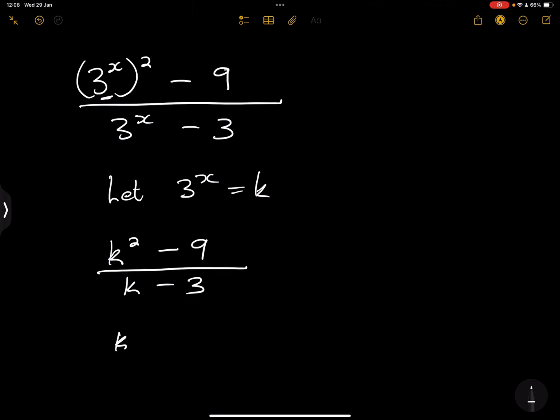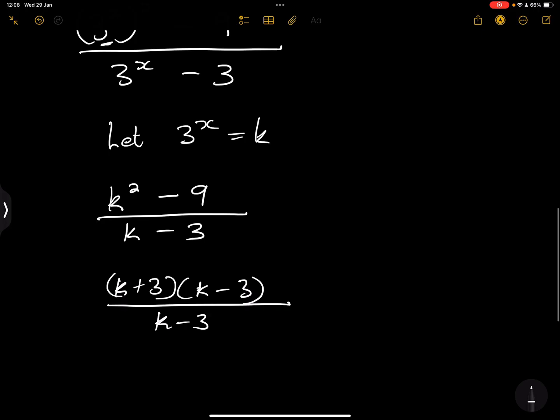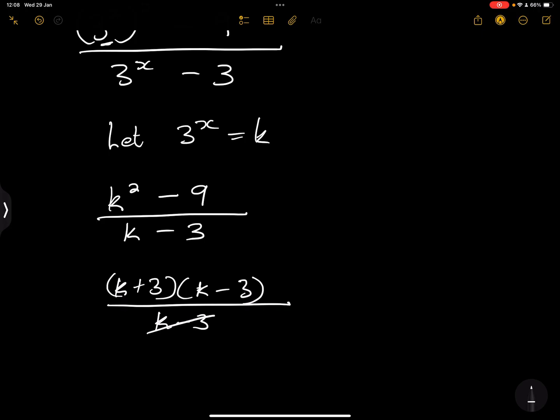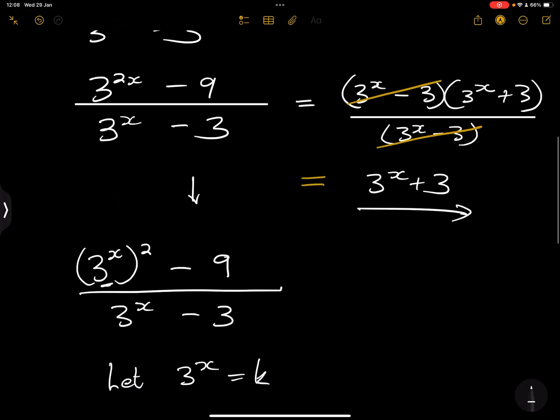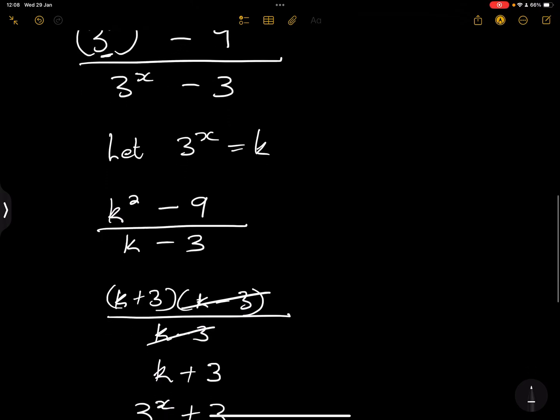So I hope now you are able to see that you've got the difference of two squares at the numerator. So that will become K plus 3, K minus 3, and this is divided by K minus 3. And what happens is you cancel that with that. That gives us K plus 3, and your final answer will now be 3 to the power x plus 3, which is exactly what we had in our answer there.